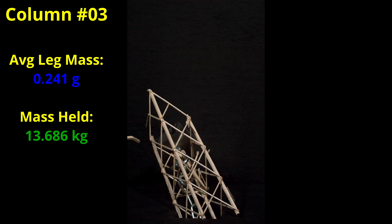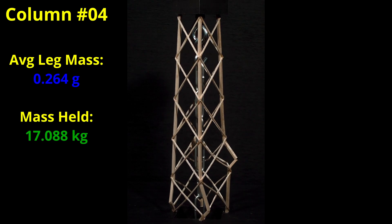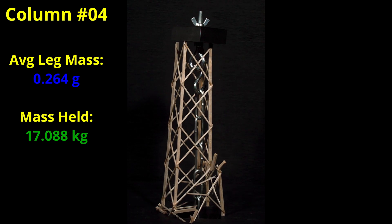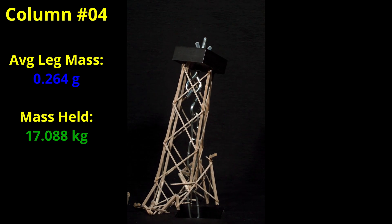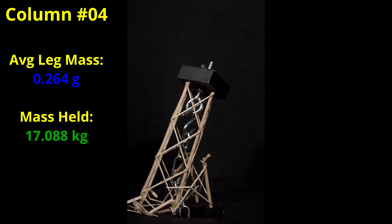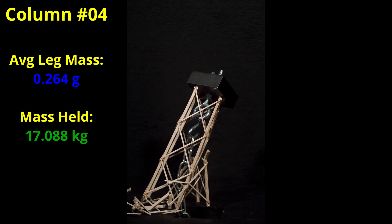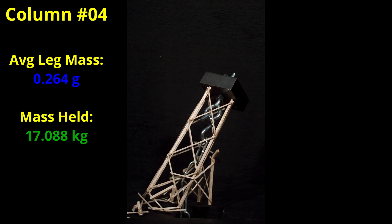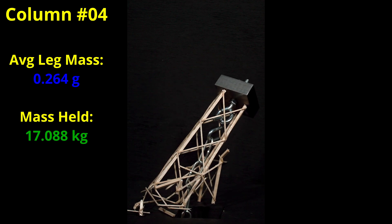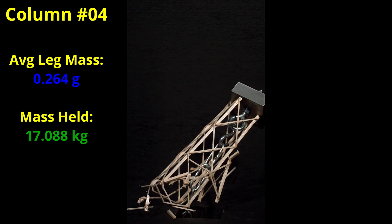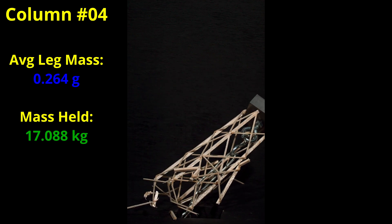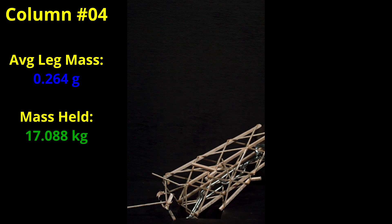Let's take a look at the next three column results. Column number 4 had an average leg mass of 0.264 grams and now we are well above the full load threshold of 15 kilograms at 17.088 kilograms. Did we finally find a leg mass that we can count on for our bonus builds? We are definitely getting closer but let's see if the results are consistent.